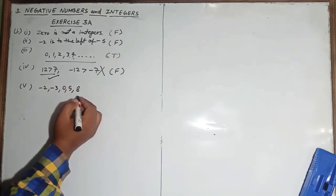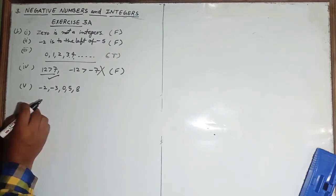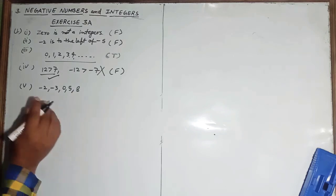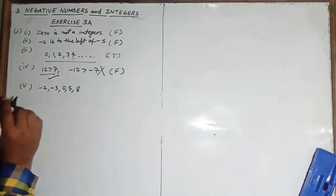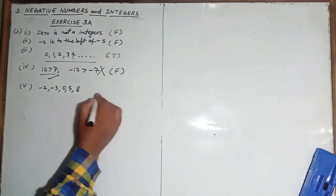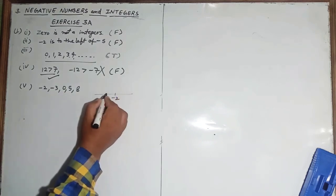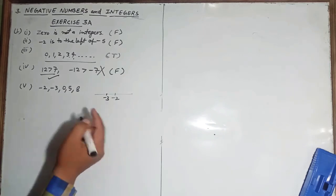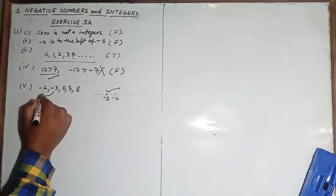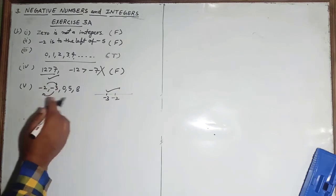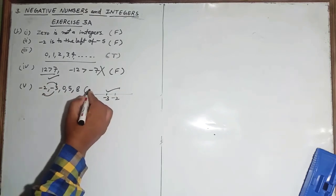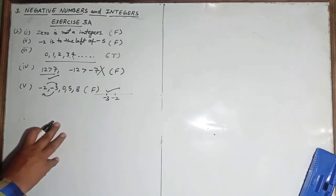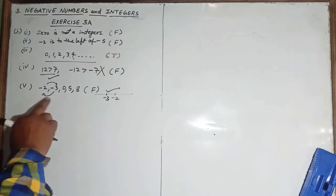Fifth part: 'Minus two, minus three, zero, five, eight is a set of integers arranged in ascending order.' Ascending order means you write the smaller one first. Minus three should come before minus two, so the arrangement given is wrong. The answer is false.